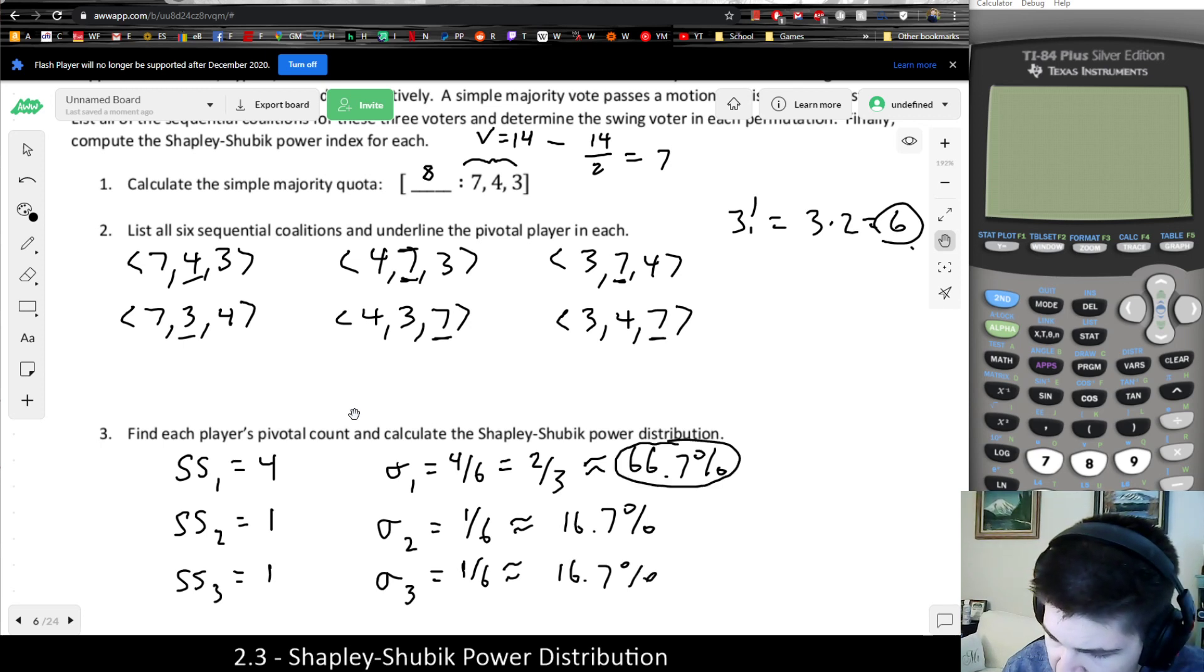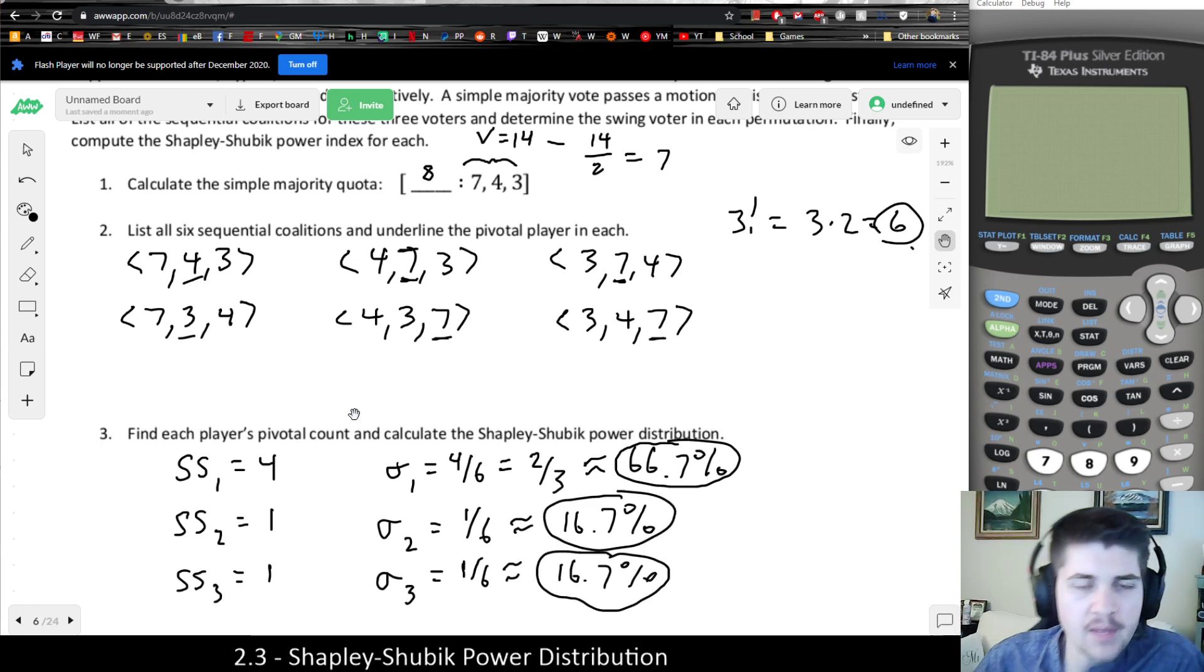So again, you could just divide those through, move the decimal twice to get their percentage. Or in the case of the online homework, usually it just wants the fraction anyways. But anyways, a couple things to check yourself after you're done is, what you want to make sure is that all the percentages actually add up to 100%, because that's the whole point here, is we want to know how much power does each player have as a percentage of the total. And it might not add up to 100 exactly due to my rounding, but really, if you add up all the fractions, it should add up to exactly 1, which is equal to 100%.